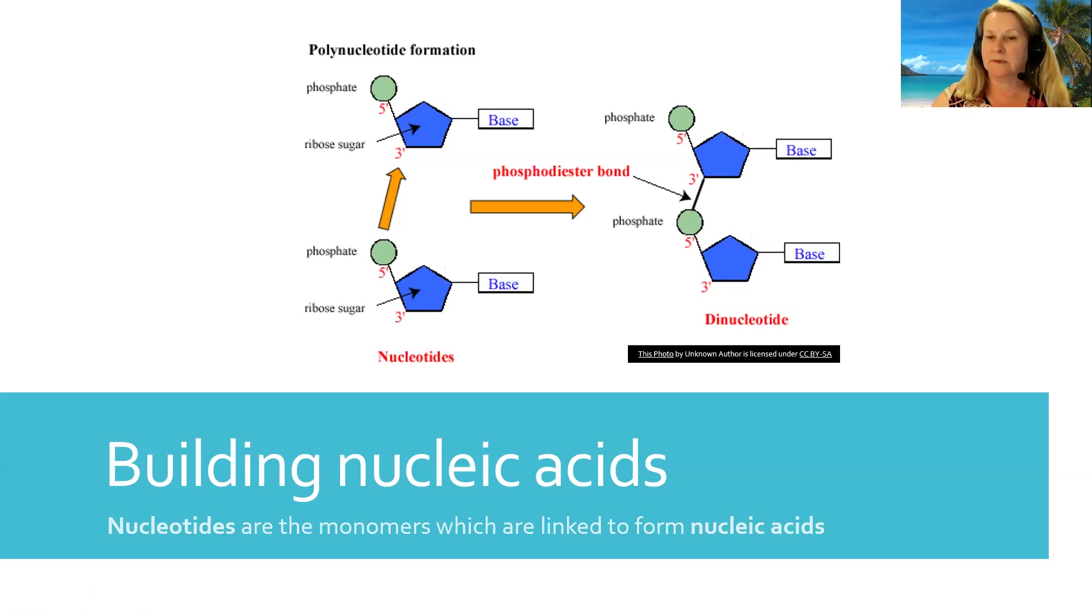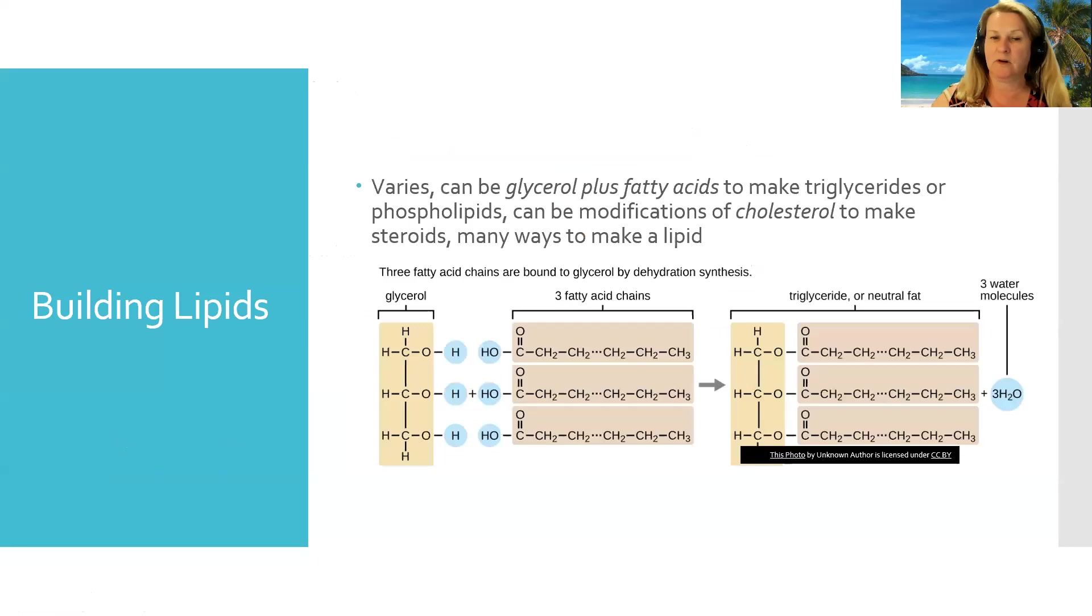And now let's look at lipids. Lipids are a little bit different and a little bit more complicated. There are many different ways to build lipid molecules. One of them we've already seen, which is taking a molecule of glycerol and some fatty acids to make triglycerides. Now, interestingly enough, when we talk about the cell, we're going to talk about the cell membrane and how it's made of a bunch of phospholipids.